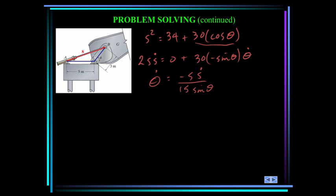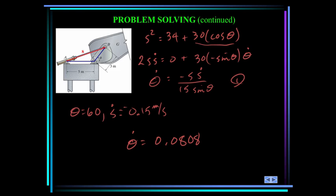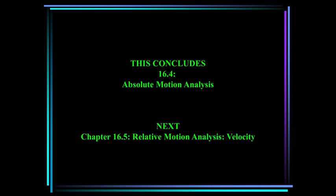We were asked to solve for theta equals 60 degrees. S-dot is negative 0.15 meters per second since the cylinder is shortening. Substituting into the equation gives theta-dot equals 0.0808 radians per second. This concludes chapter 16.4 on absolute motion analysis. Next up is chapter 16.5, relative motion analysis velocity.